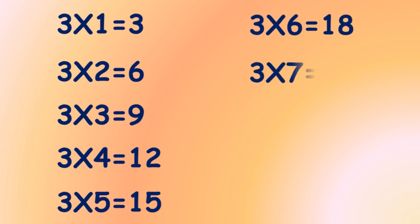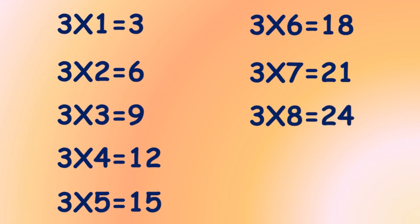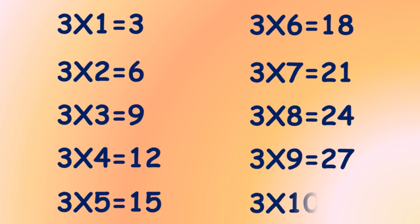Three 7s are 21. Three 8s are 24. Three 9s are 27. Three 10s are 30.